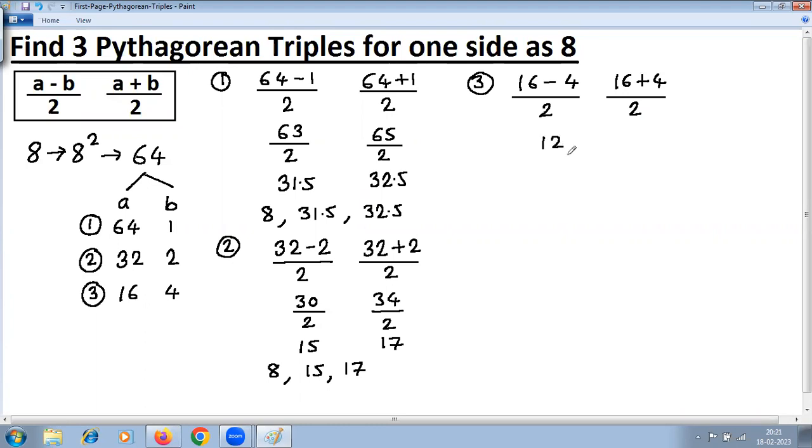This gives 12 upon 2 and 20 upon 2. So half of 12 is 6, half of 20 is 10. And the third triple is 8, 6, 10.